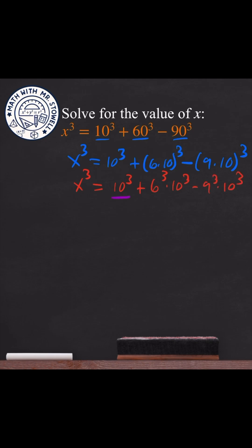All of these terms have 10³, so let's factor it out. In other words, x³ = 10³ × (1 + 6³ - 9³). There's not a number in front of the first term, so that's just 1.